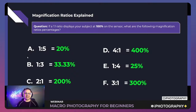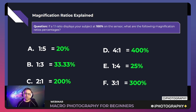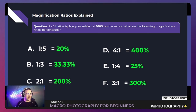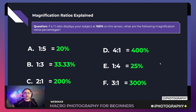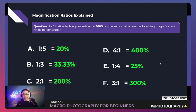Here are the answers: one-to-five is 20%, one-to-three is 33.3%, two-to-one is 200%, four-to-one is 400%, one-to-four is 25%, and three-to-one is 300%. Well done to everyone who got those right! This just helps you understand how much of your subject is being magnified and how close it is to actual size in real life when you see your raw image.